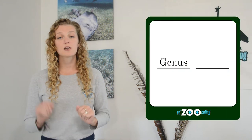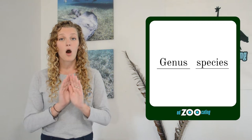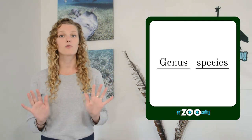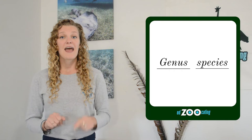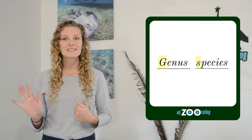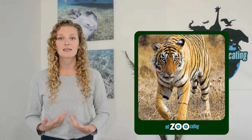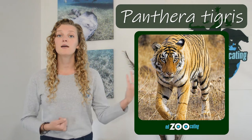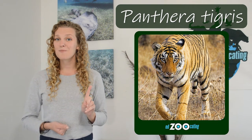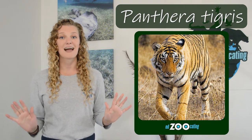Our first word is the genus and our second word is the species. When writing a scientific name, all parts of the name are written in italics. The first word, our genus, is capitalized, and our species name is lowercase. So let's think of a tiger — if I'm writing about a tiger, I'm going to write Panthera tigris, capitalize the P of Panthera, and write the entire scientific name in italics.